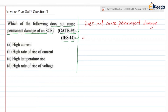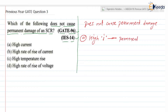The first option is high current. When a high current flows through the SCR, the power loss is equal to I² × R. So when high current flows, the power loss will be high. Due to that high power loss, high heat will be generated, and that high heat will cause permanent damage of the SCR.